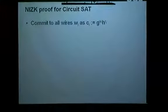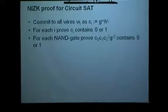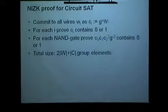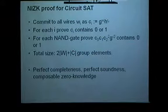To summarize, what we have now is a non-interactive zero-knowledge proof for circuit satisfiability, which works as follows: we commit to all the bits, for each of those commitments we prove that it contains zero or one, for each NAND gate we give a proof that it's respected. We have a fairly small proof size and it's a fairly simple construction. We get perfect completeness, perfect soundness, and composable zero-knowledge.